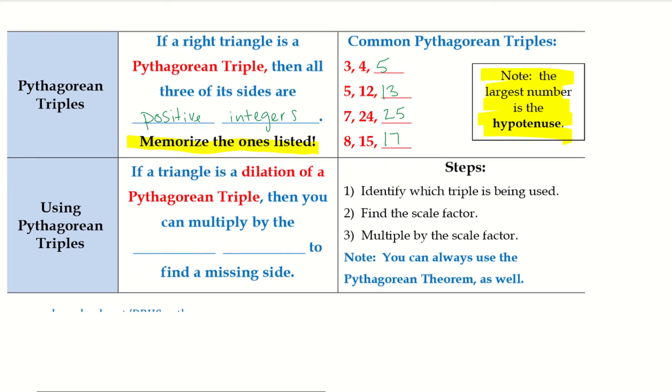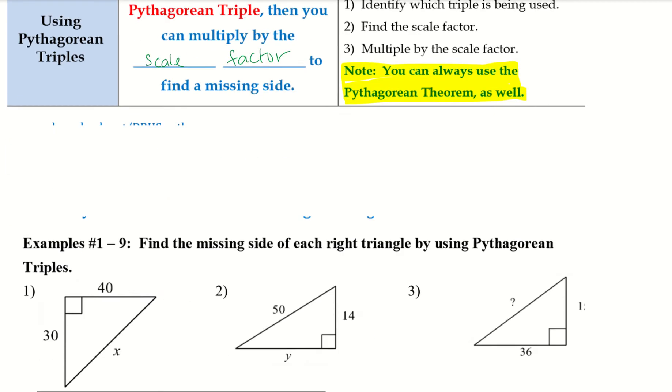Alright, and then using Pythagorean triples, if a triangle is a dilation of a Pythagorean triple, then you can multiply by the scale factor to find a missing side. So, first, identify which triple is being used. Second, what is the scale factor? And three, multiply by that scale factor. Note, you can always use the Pythagorean theorem as well. So this is a good fallback if you're not quite sure if this is a triple or not, because not every triangle is a Pythagorean triple.